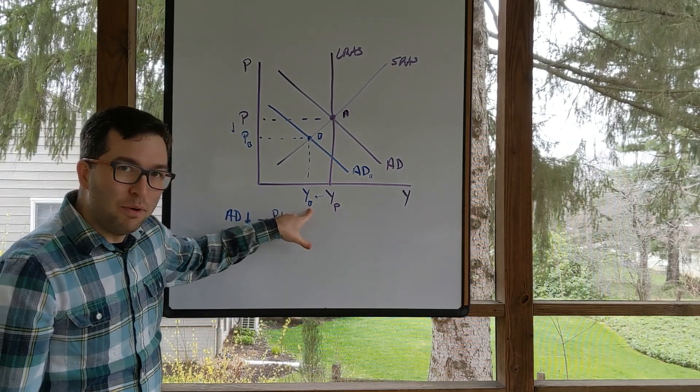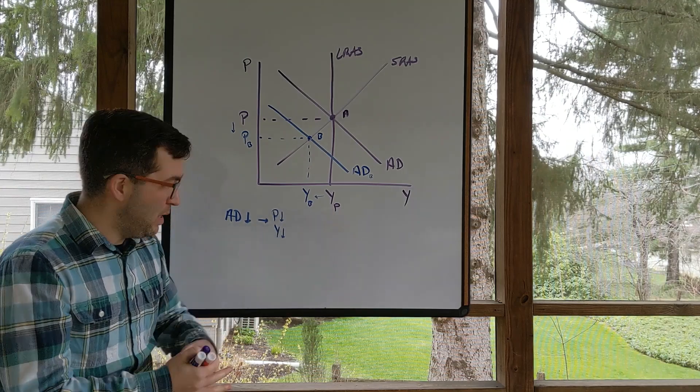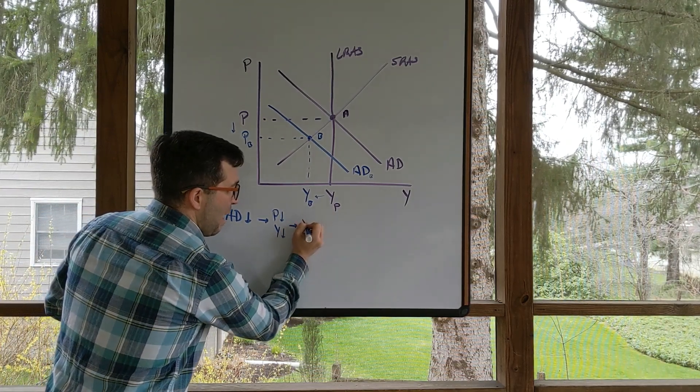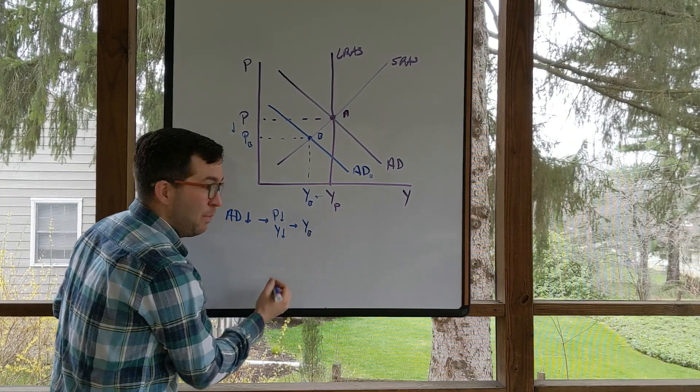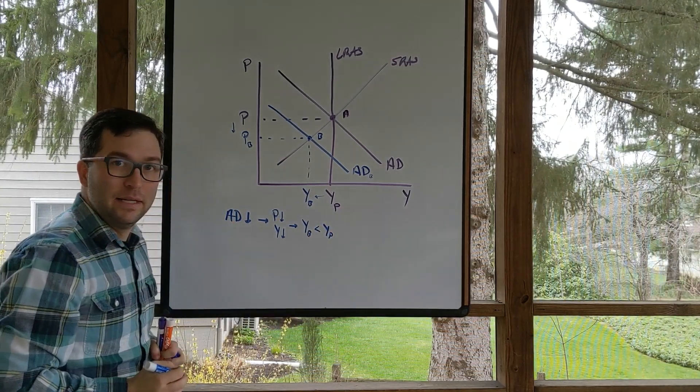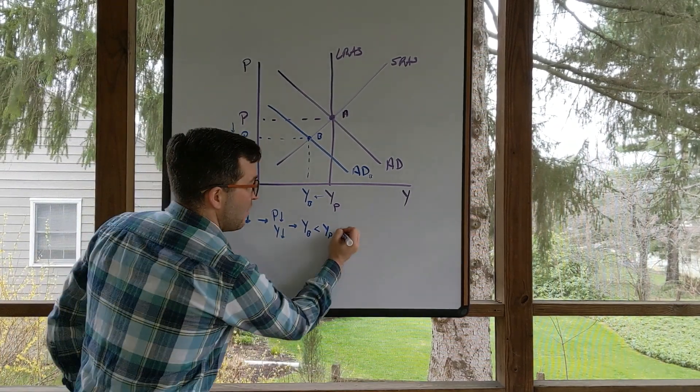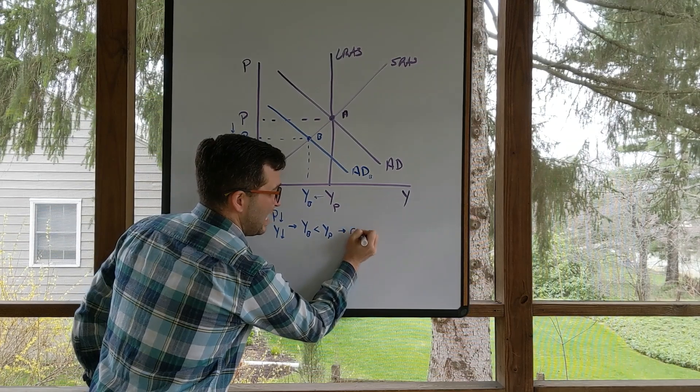We see that output is less than potential GDP. So we see that my current level of output is less than that potential GDP. That tells us that we are currently in a recessionary period. Because of this, we are in a recession.